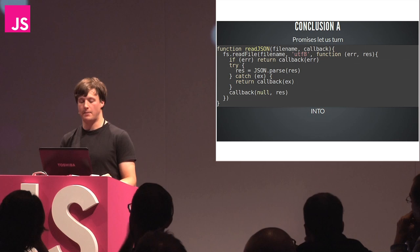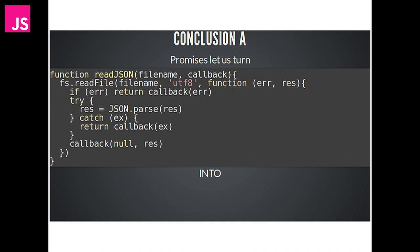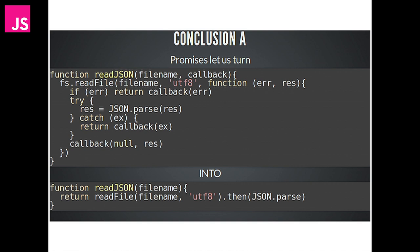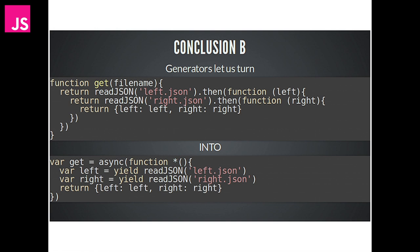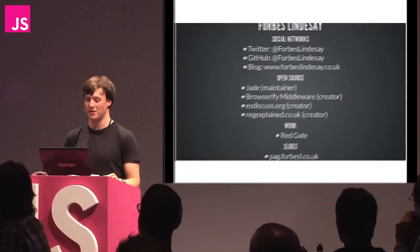To wrap up: promises let us turn a readJSON function that's 90% error handling into one that just has the business logic and a simple then method to indicate something asynchronous is happening. Generators let us turn nested readFile operations with multiple calls to then into something that looks much more like what we're used to seeing - multiple operations one on each line, with no need for indentation just to create that asynchronous control flow. I've been Forbes Lindsay. Thank you for listening. You can find me on Twitter, GitHub. I have a blog, I maintain loads of open source projects, I work at Redgate, and the slides are online if you want to grab them.